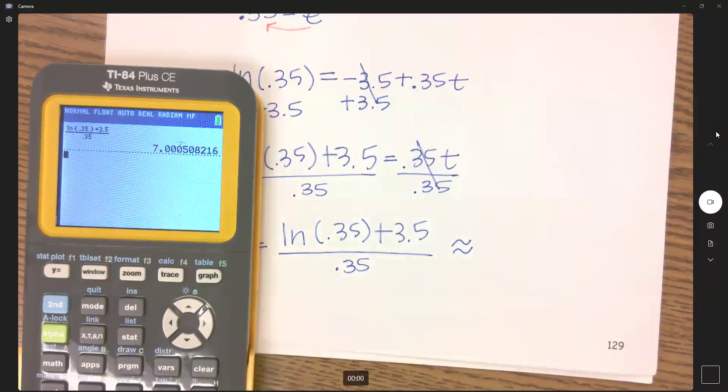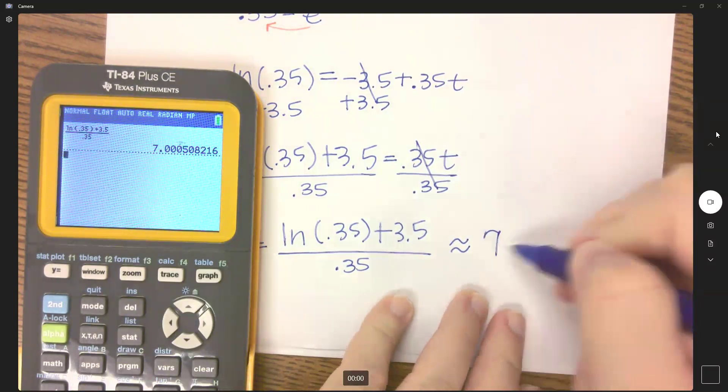Rounding to the nearest whole number, that is very very close to seven, so in about seven hours the dosage will reach 65%.